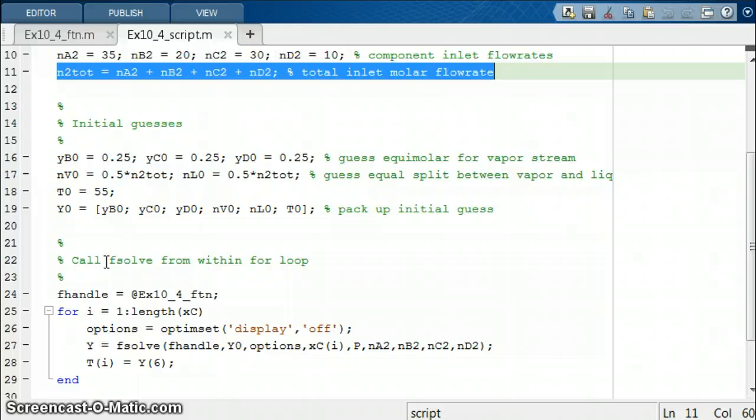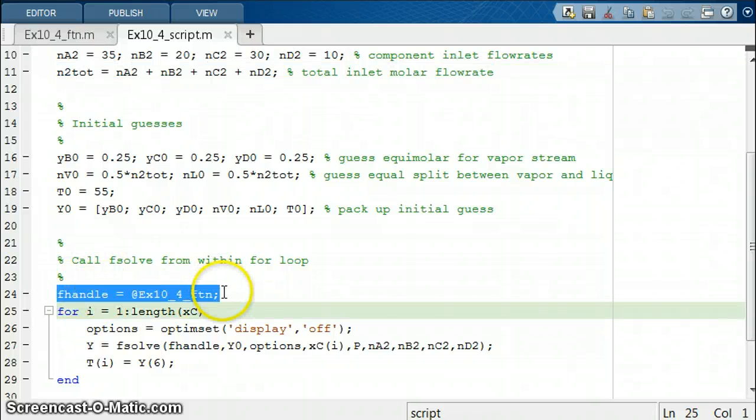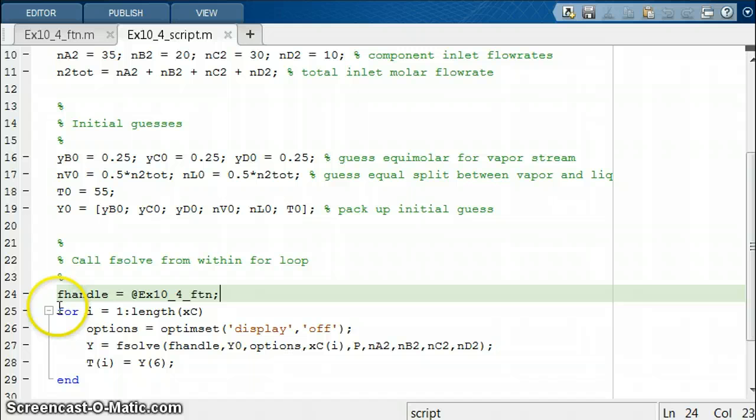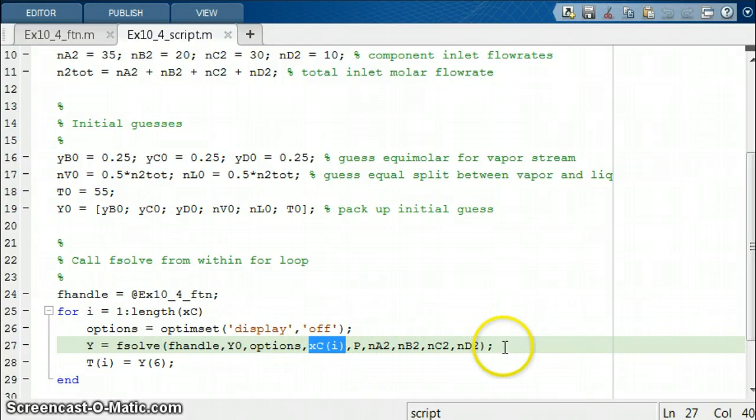Now we're going to call fsolve from within our for loop. Here's our function handle. Here is our for loop as i goes from 1 to the length of XC. We're going to call fsolve, and the thing that I left out in the lecture notes was that every time we run through fsolve, we have to give it a different value of XC. For the i-th iteration of the for loop, we're going to give fsolve the i-th value of XC. All these other ones are just constants, and they're going to stay the same every time we go through the for loop.